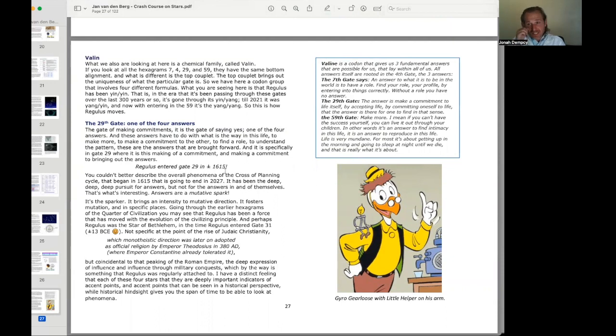Regulus entered gate 29 in 1615. You couldn't better describe the overall phenomenon of the cross of planning cycle that began in 1615 that is going to end in 2027. It has been the deep, deep, deep pursuit for answers. But not to the answers in and of themselves. Answers are a mutative spark. It's the sparker. It brings an intensity to mutative direction.